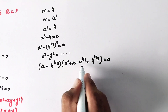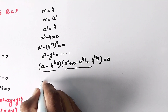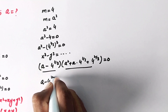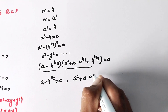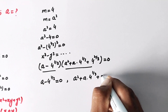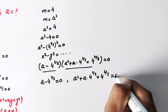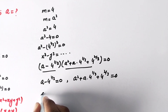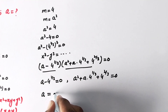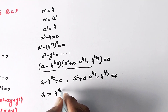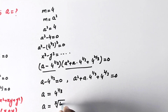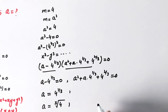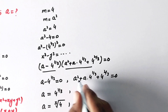Now again we have two solutions. We write a minus 4 raised to power 1 over 3 equals 0, and a squared plus a times 4 raised to power 1 over 3 plus 4 raised to power 2 over 3 equals 0. From the first factor, a equals 4 raised to power 1 over 3, which is the cube root of 4. On the other side we can see there is a quadratic equation, so we will use the discriminant formula again.